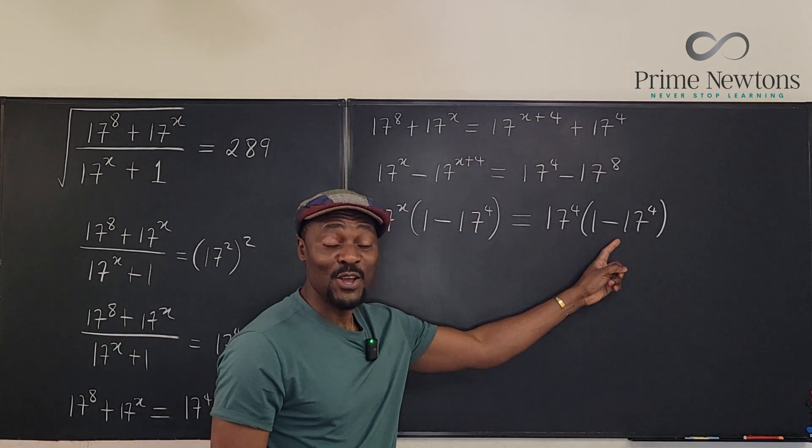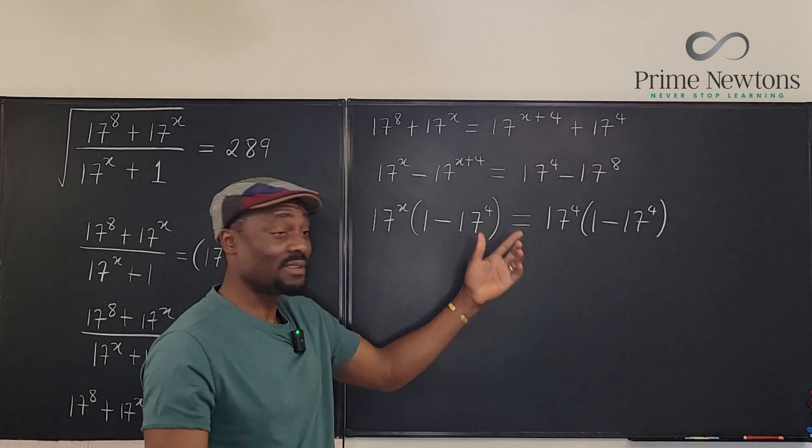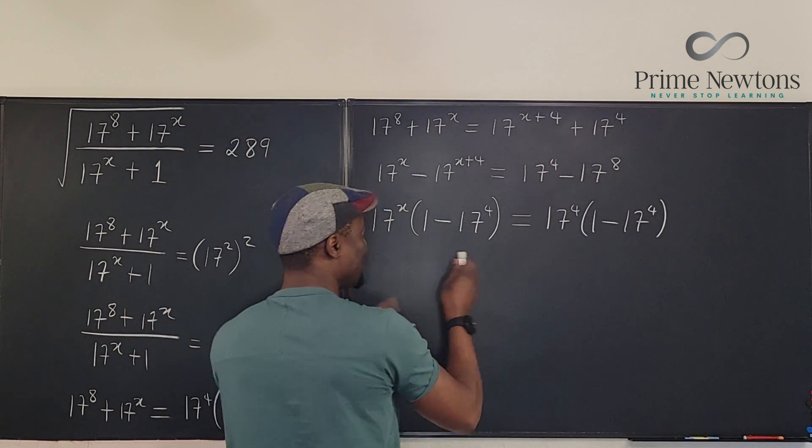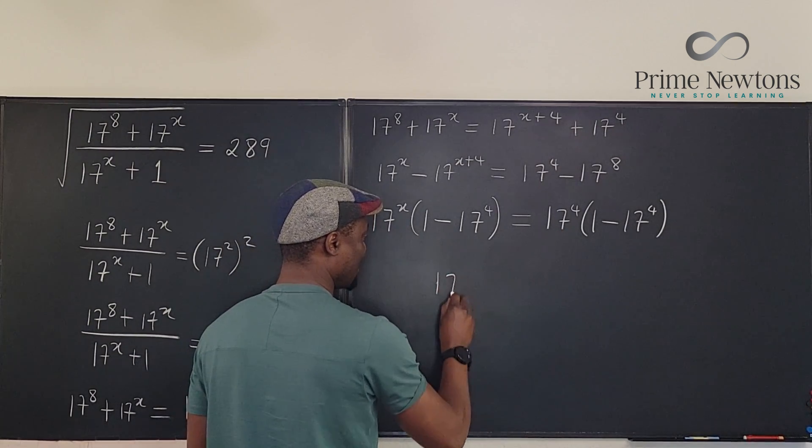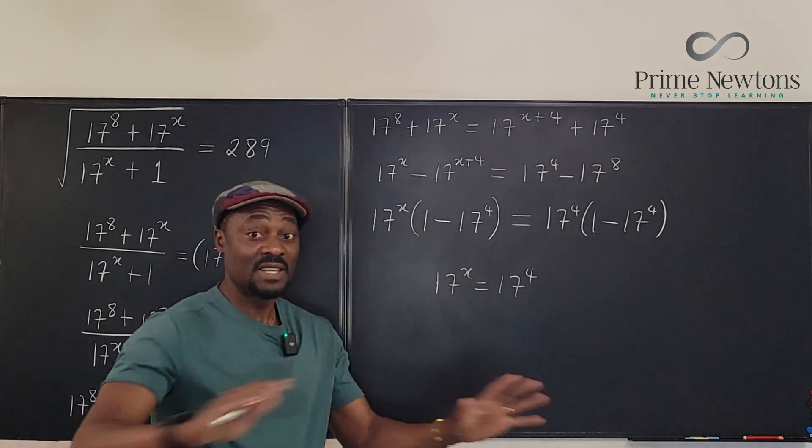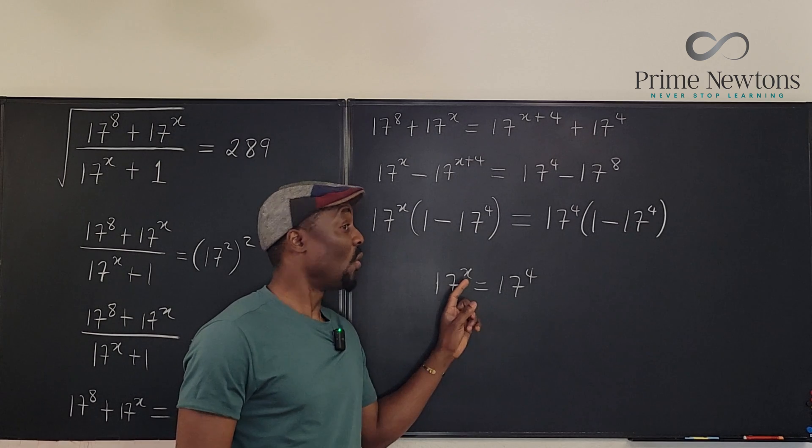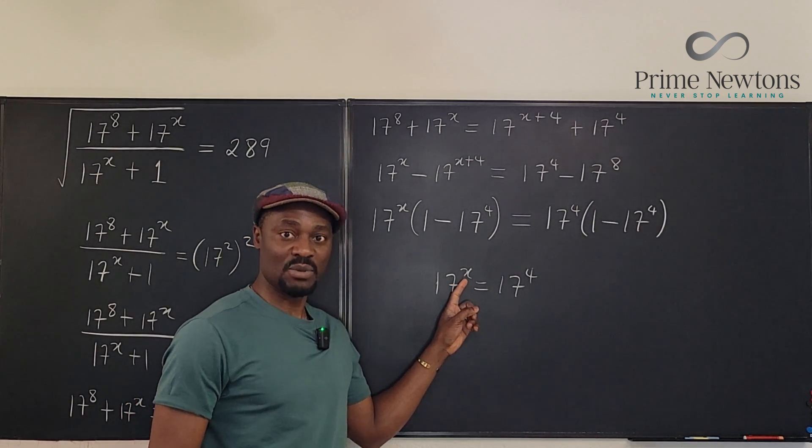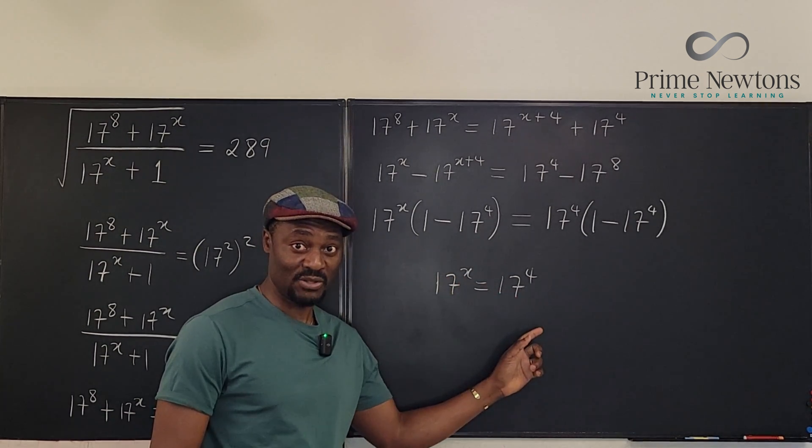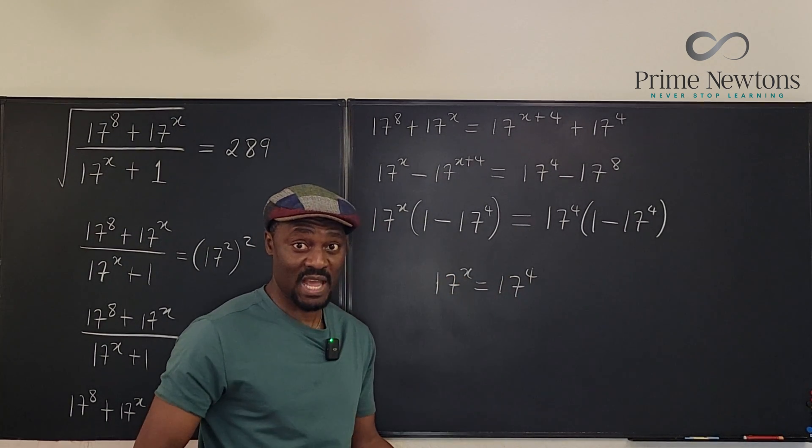So I have this is also here. I can divide both sides by this because this is not 0. 1 minus 17 to the 4th is not 0. So if I divide both sides by this, I can clearly say that 17 to the X is 17 to the 4th. There is no other value, no other real value or imaginary or anything that this can be. The only value of X that satisfies this equation is if X is 4. You have shown that that's the only answer.